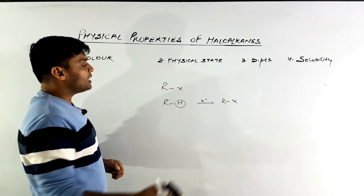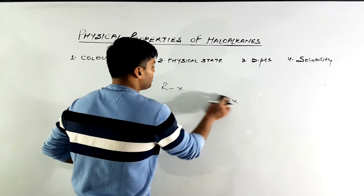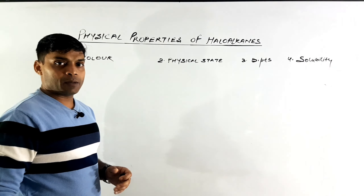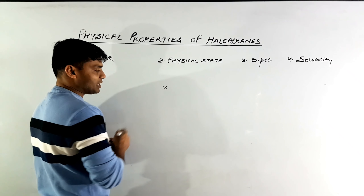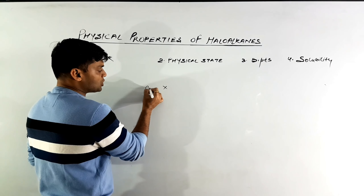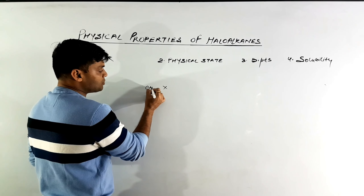Hi everybody, this is Ankur Goyal and once again I welcome you all to my channel Chemistry Redefined. In continuation with the previous video lectures on alkyl halides, we will discuss the physical properties in this class today. There are 4 very important physical properties: color, physical state, boiling points, and solubility. We will be discussing these 4 physical properties one by one.